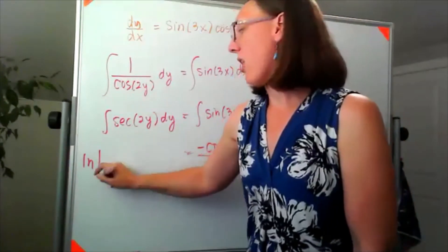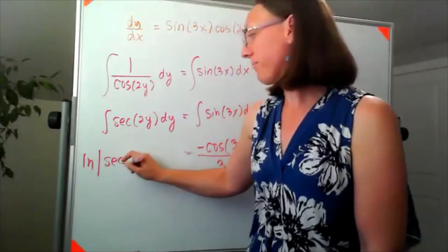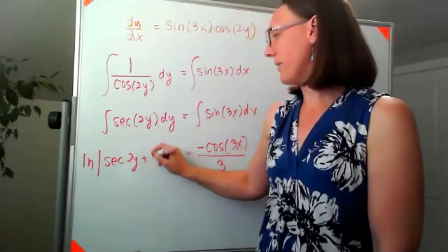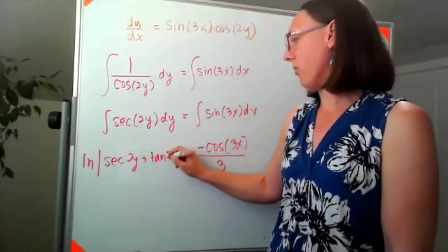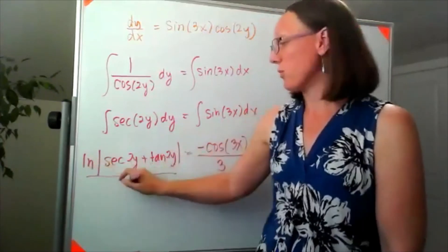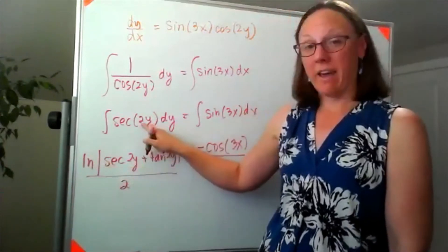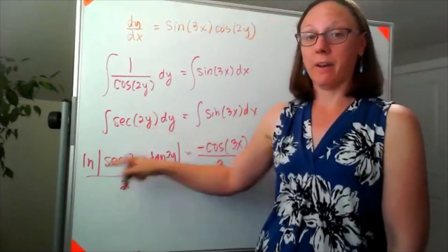The integral of secant is natural log absolute value of secant of my angle plus tangent of my angle. Then again, I'm going to have to remember to divide by 2 to account for the chain rule that would happen if I took this derivative.